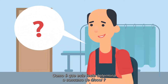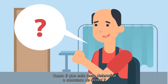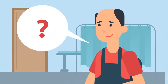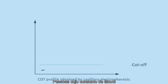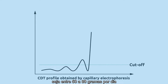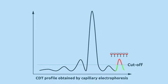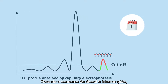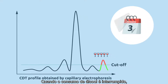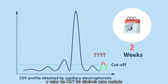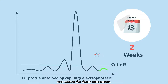How does this test determine alcohol consumption? People who take between 50 and 80 grams of alcohol per day have higher CDT levels. When you stop your alcohol consumption, the CDT value will decrease by half in about 2 weeks.